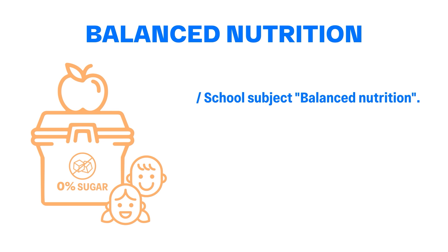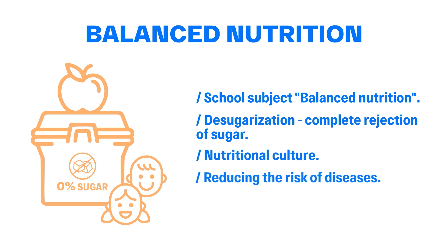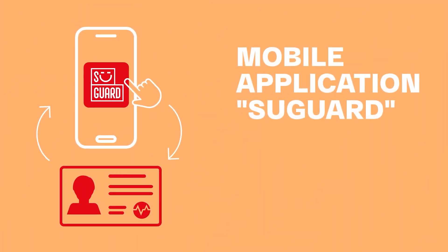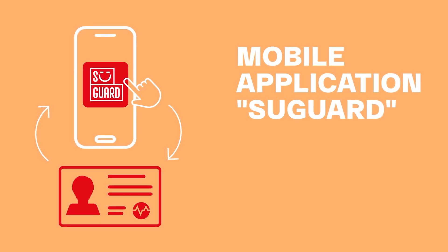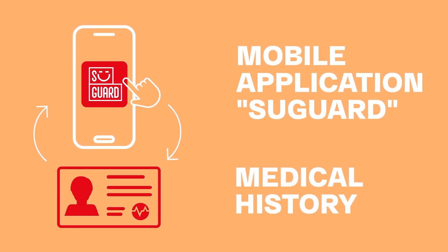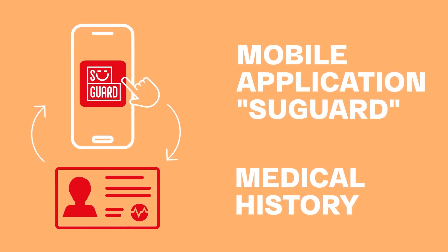School education: Balanced nutrition is introduced into the educational program of every school of UTP. The basis is the complete rejection of sugar and formation of a nutritional culture from childhood, reducing the risk of chronic diseases and increasing longevity. All students are registered in the mobile application Shugard — each of them will have a daily medical history recorded from childhood. The earlier it begins to form, the more complete the picture of each person's health becomes over the years.